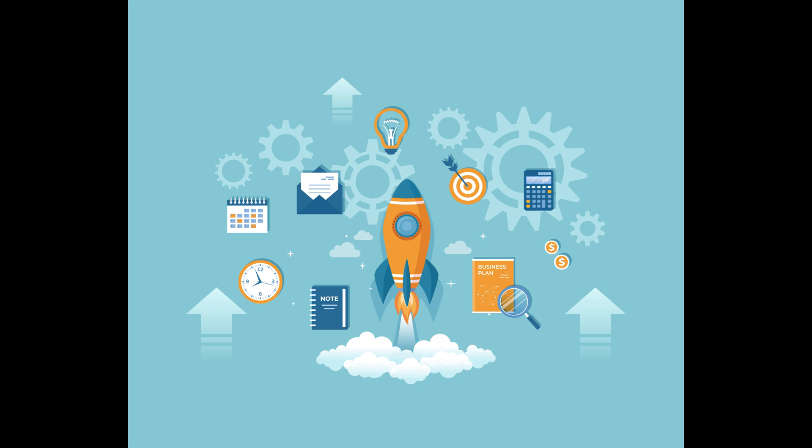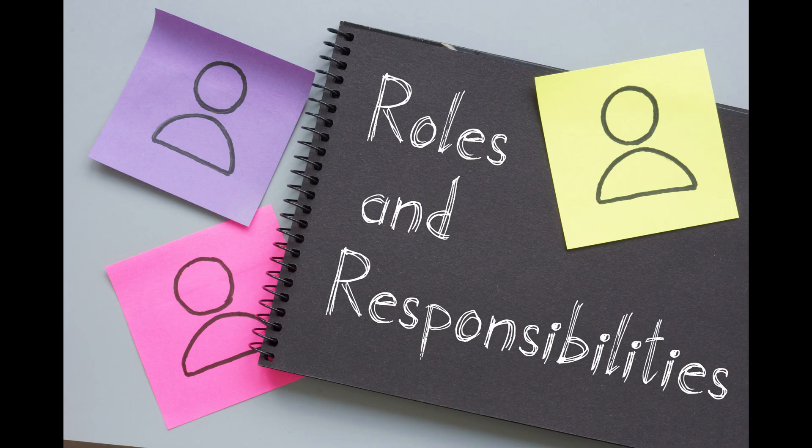Second, quality objectives. These are the goals that the organization sets to achieve a desired level of quality. Third, organizational structure. This defines the roles and responsibilities of individuals and departments within the organization.